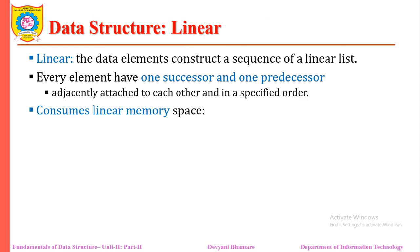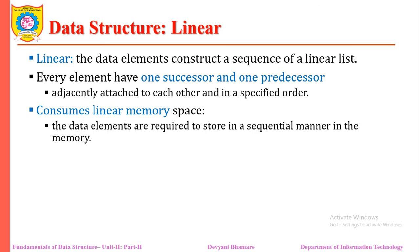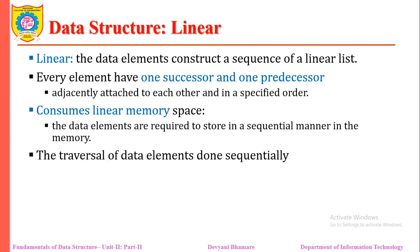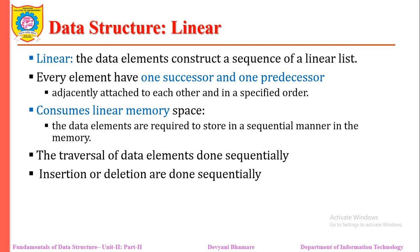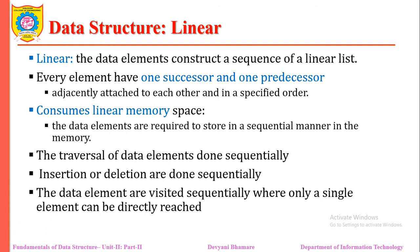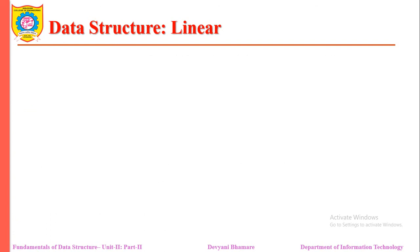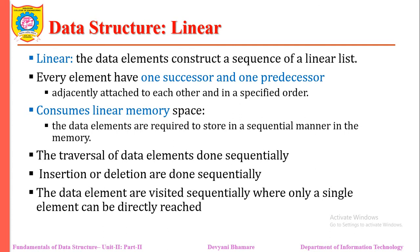In linear data structures, the data elements are constructed in a sequence or linear list. Every element has one successor and one predecessor. It consumes linear memory spaces, and data elements are required to be stored in sequential manner in memory. To traverse from one element to the last, we go sequentially, and insertions and deletions are also done sequentially — we visit elements one at a time.